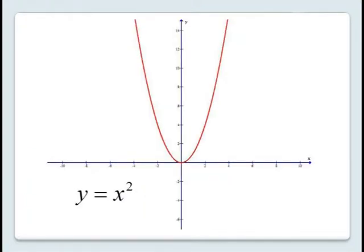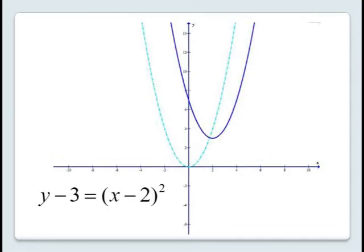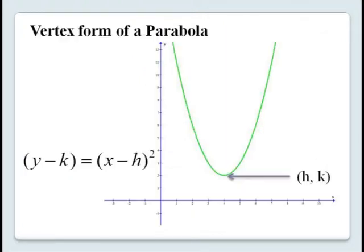We can make a similar argument for the parabola y equals x squared, which opens upwards and has its vertex at the origin. If we want to graph y minus 3 equals x minus 2 squared, we've replaced y by y minus 3 and x by x minus 2, so this translates the graph 2 units to the right and 3 units upwards, moving the vertex from (0, 0) to (2, 3). In general, y minus k equals x minus h squared will move the vertex from the origin to the point (h, k).